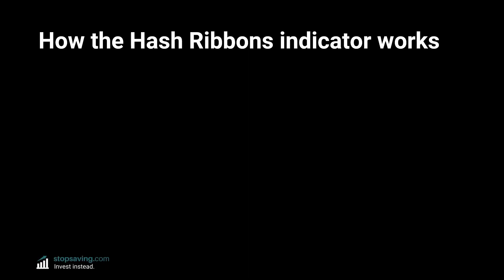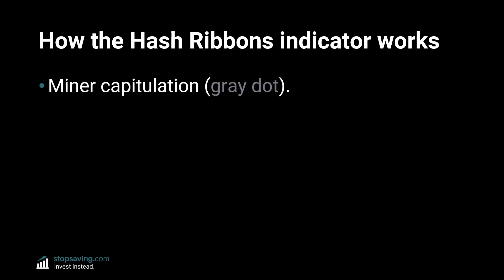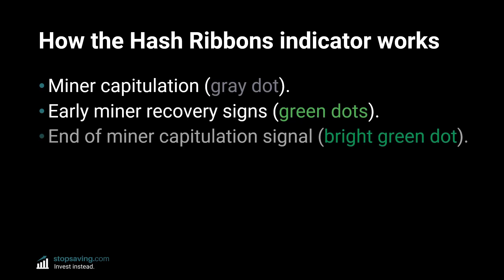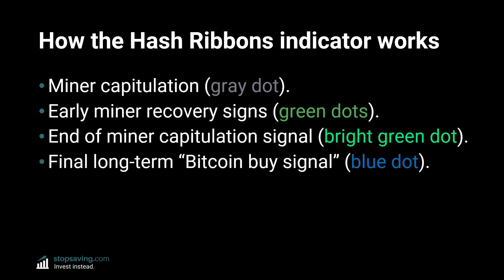So how does the Bitcoin Hash Ribbons indicator work exactly? The Hash Ribbons indicator gives a long-term Bitcoin buy signal over four stages. First, there's miner capitulation, shown with a gray dot in the chart. Next, there's early miner recovery signs represented by green dots. Then there's the end of miner capitulation signal with bright green dots. And finally, the long-term Bitcoin buy signal with a blue dot in the chart.